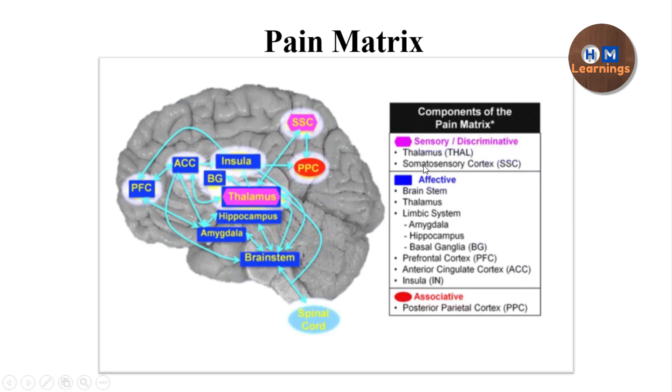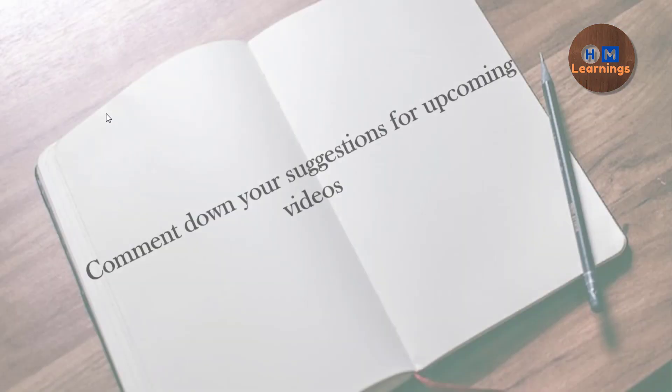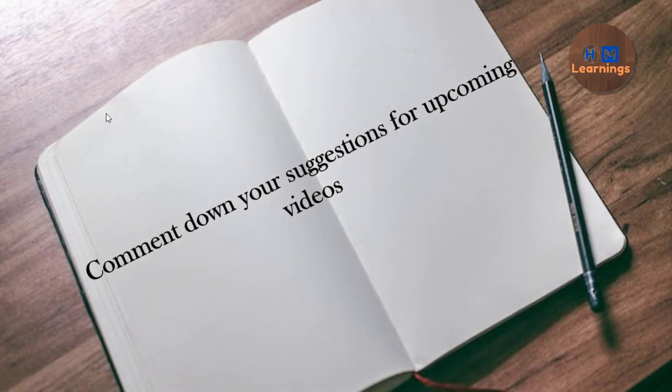The associative component involves the posterior parietal cortex. To summarize: pain perception is a complex process explained by the pain matrix theory, which states that different brain areas are activated to encode different aspects of pain so that you can feel pain as a whole.